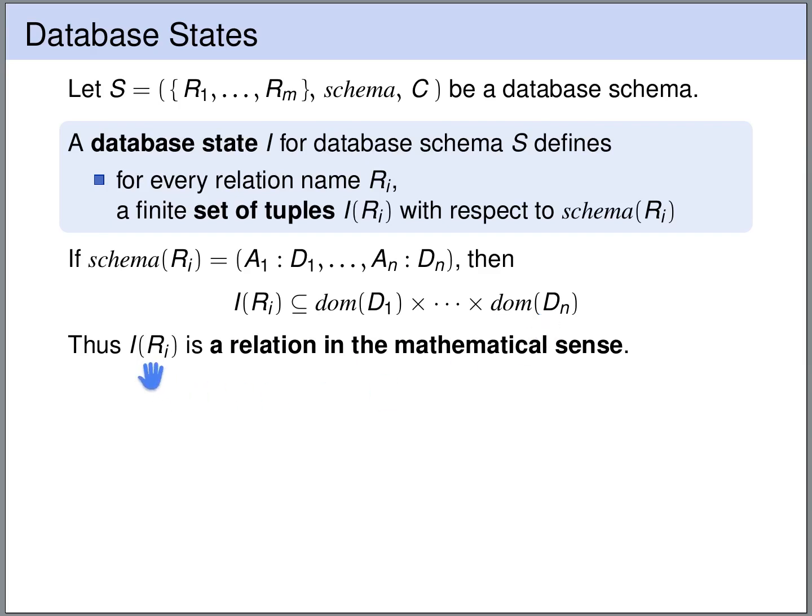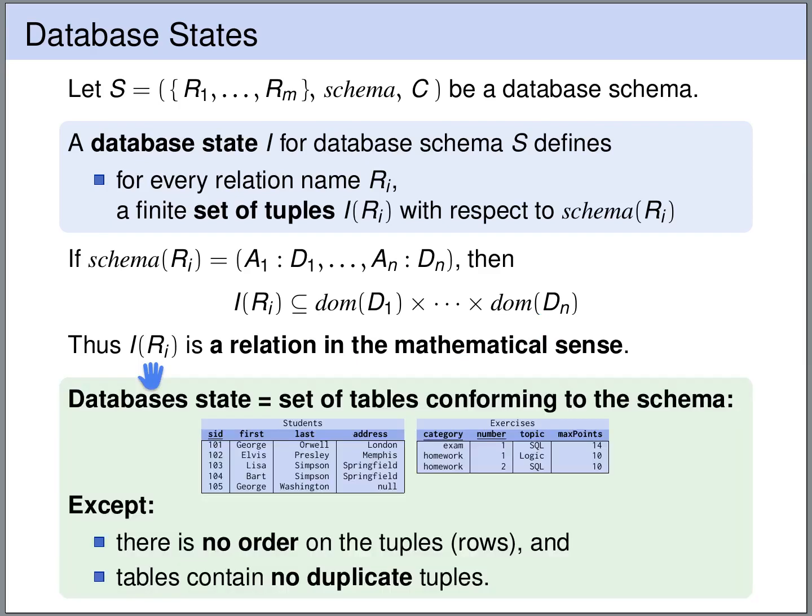So I(R_i) is a relation in the mathematical sense. Simplified, you can think of the database state as a set of tables that conform to the database schema S.